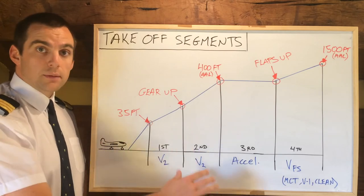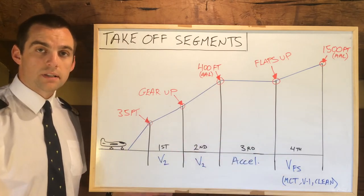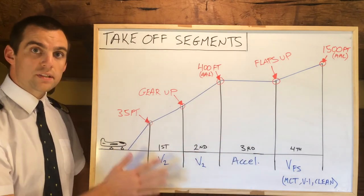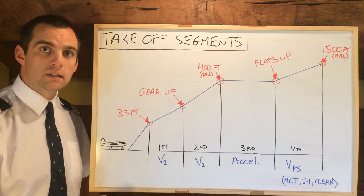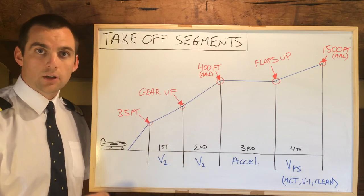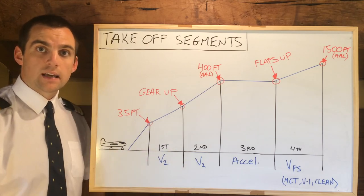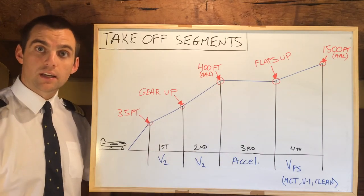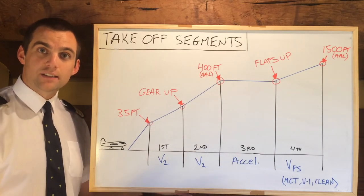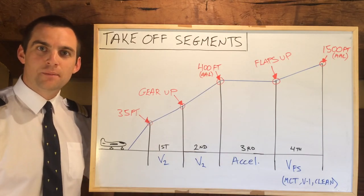And those are the four segments. It's just a one engine inoperative scenario, and all this is here to guarantee a safe margin above any obstacles that we may have straight ahead after taking off. Nice and simple to look at when you see it like this. If you'd like to see more videos, please like, share and subscribe.